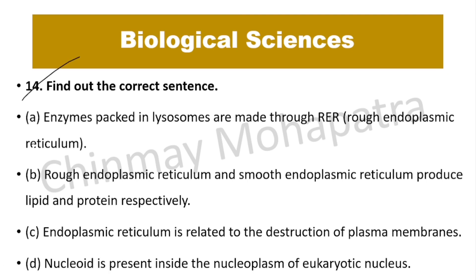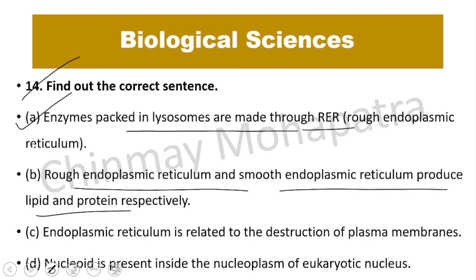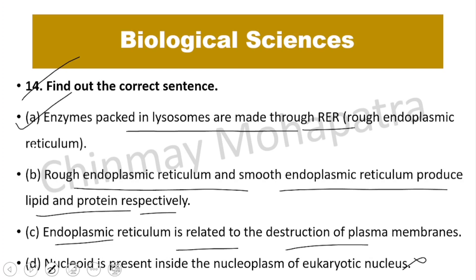Question number 14: Find the correct sentence. The correct statement is: enzymes packed in lysosomes are made through the endoplasmic reticulum. The other options are incorrect — rough ER produces proteins and smooth ER produces lipids (not the reverse); ER is not related to destruction of plasma membrane; and nucleoid is not inside the nucleoplasm. The enzymes in lysosomes are prepared in the ER and reach the lysosome via Golgi bodies.